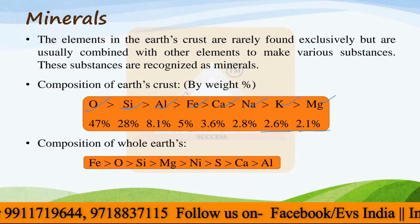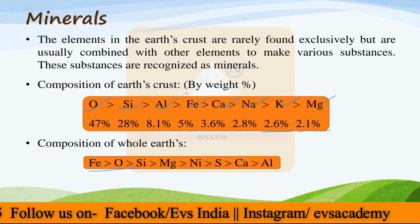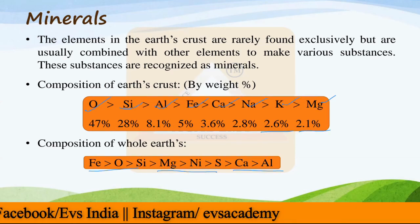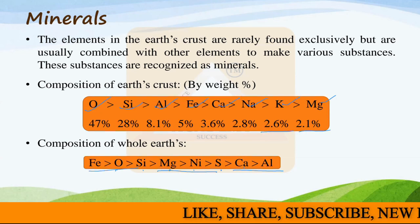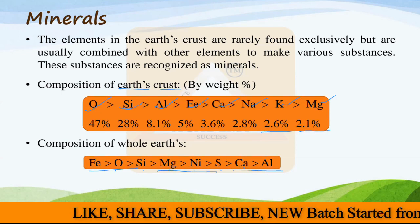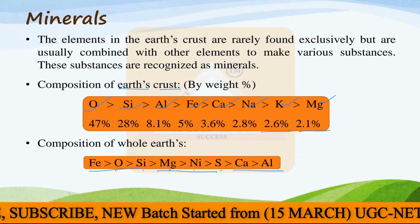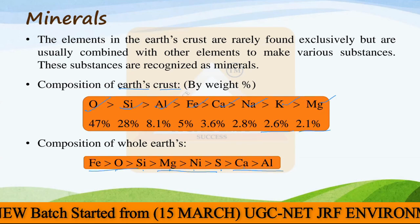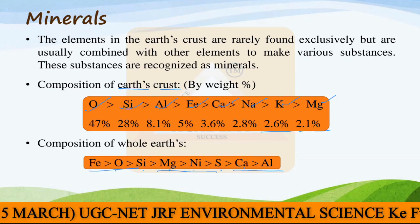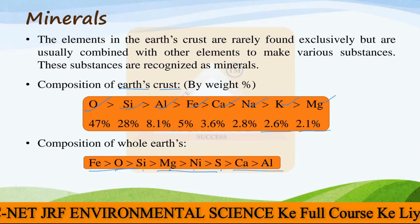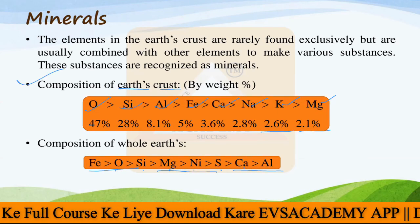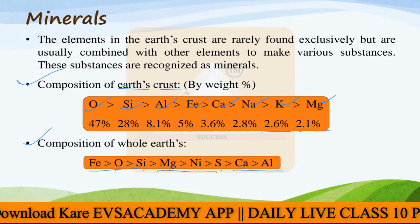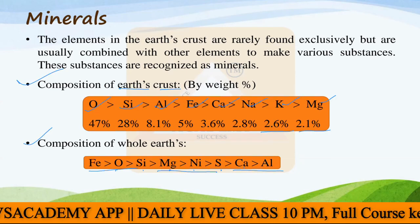If you look at the whole earth composition, the order is: iron, oxygen, silica, magnesium, nickel, sulfur, calcium, and aluminium. In examinations, read the question carefully — whether it is asking about the whole earth or only the earth crust, because the composition differs. Every year questions come from this section on either the whole earth or the earth crust composition.